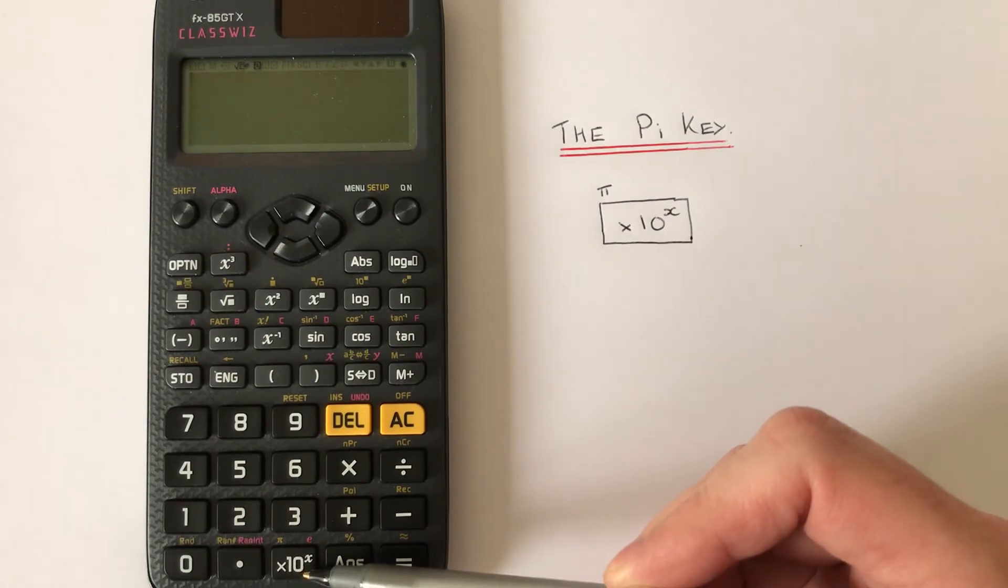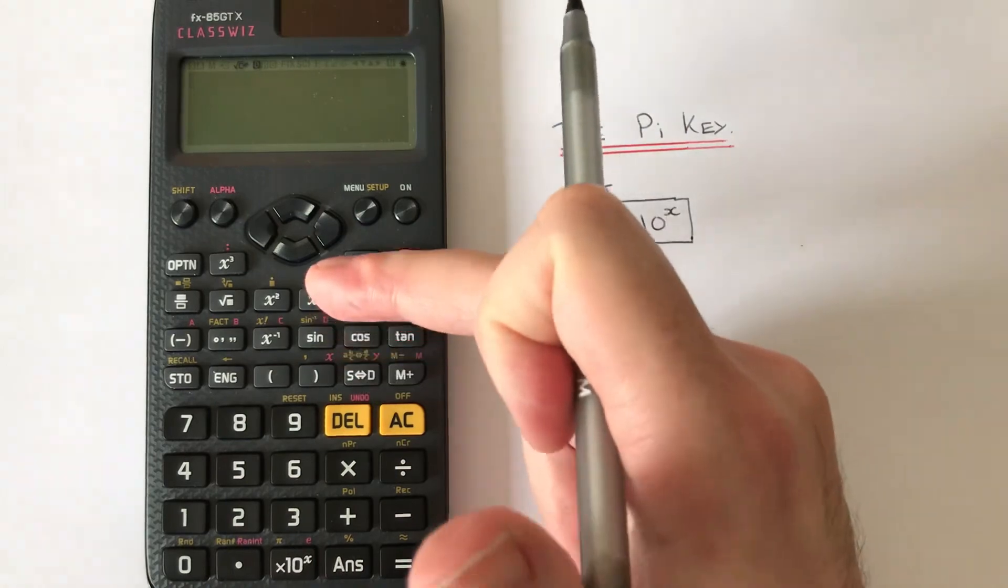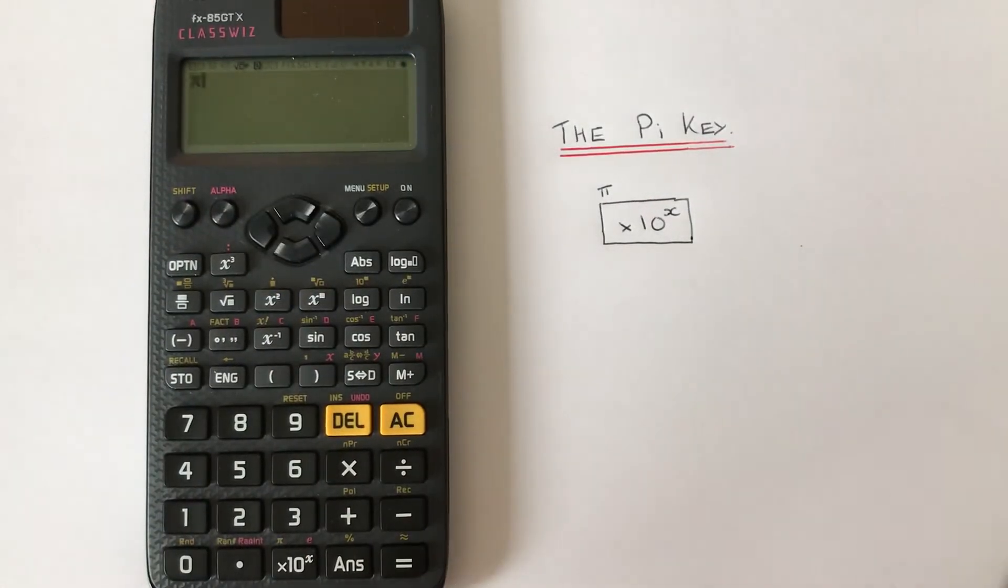of the times 10 to the power of X key. To get this on screen, we need to press shift, then times 10. You'll see it come onto the screen. If you want to know the value of PI,